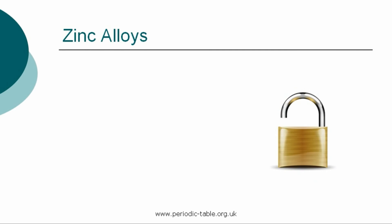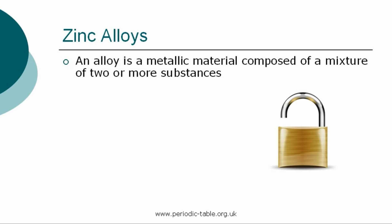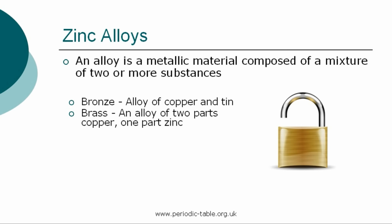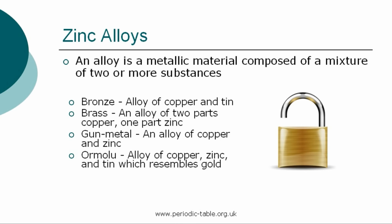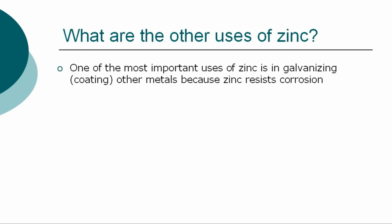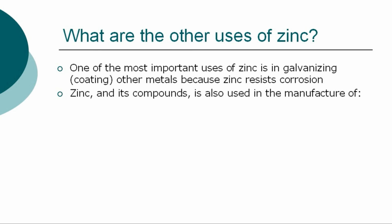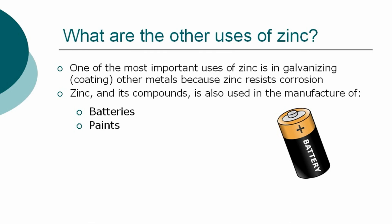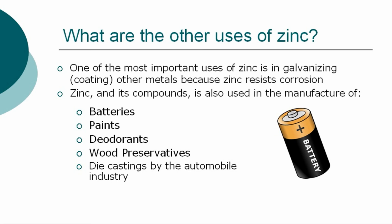Once the properties of an element have been established, we then have the ability to identify how it can be used. Zinc is used extensively in alloys — a metallic material composed of a mixture of two or more substances. Examples are bronze, which is an alloy of copper and tin; brass, which is an alloy of two parts copper and one part zinc; gunmetal, which is an alloy of copper and zinc; and ormolu, which is an alloy of copper, zinc, and tin that resembles gold. It is also used for flashing on roofs as a cheaper alternative to lead. One of the most important uses of zinc is in galvanizing or coating of other metals, because zinc resists corrosion. Zinc in its compounds is also used in the manufacture of batteries, paints, deodorants, wood preservatives, and in die castings by the automobile industry.